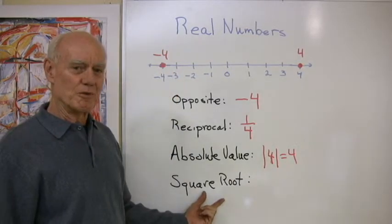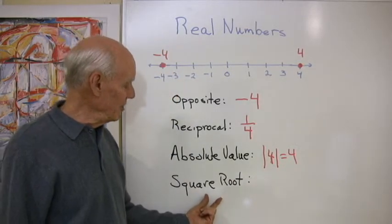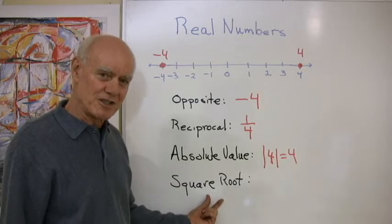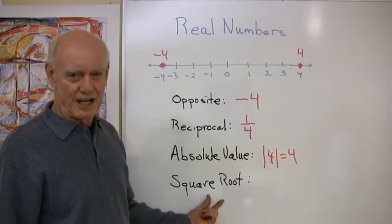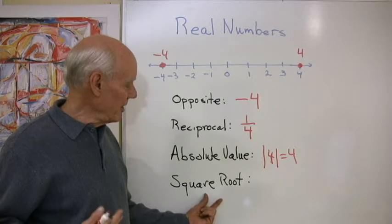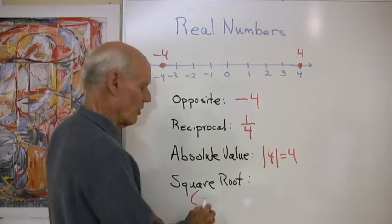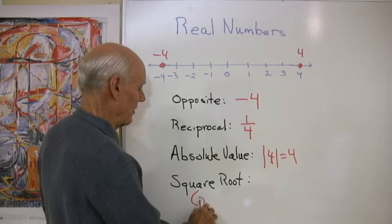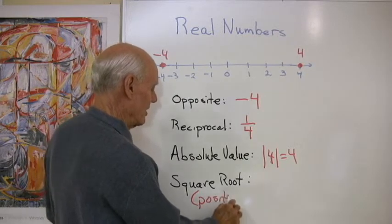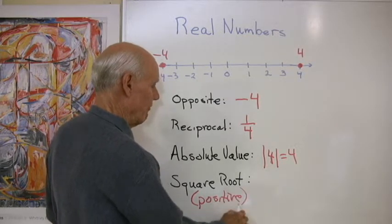And then when we say the square root of four, it's actually a little incorrect. We need to say either the positive square root of four or the negative square root of four. But a lot of times we just say square root, and when we say square root, we mean, or it's implied, that we're talking about the positive square root of four.